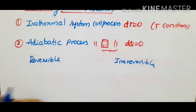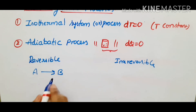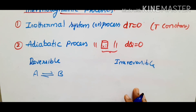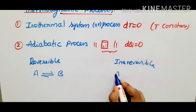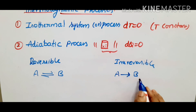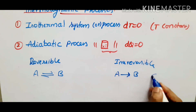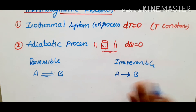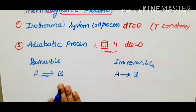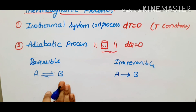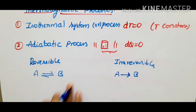A reversible reaction is one where A converts to B and B converts back — it is not easy to achieve. Irreversible reactions are easier, where A converts completely to B. For example, like water flowing — you can't reverse it. In reversible reactions, equilibrium state is obtained going from A to B form, and at any stage equilibrium can reform B to A. These are the different types of processes in the thermodynamics chapter, and this is the introductory part of thermodynamics.